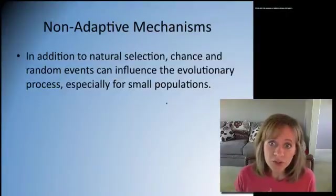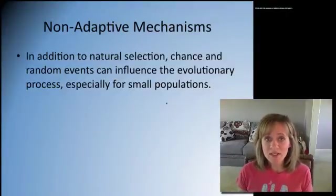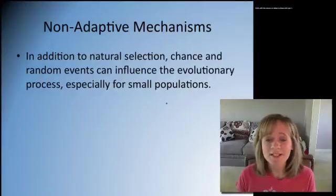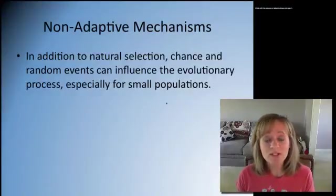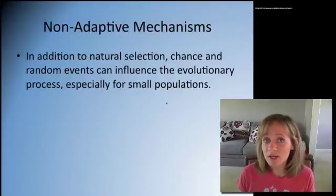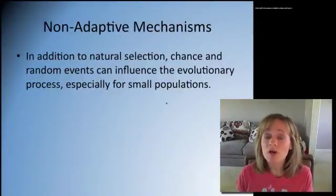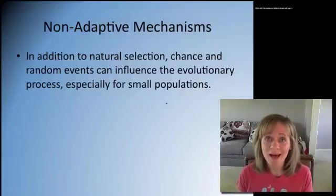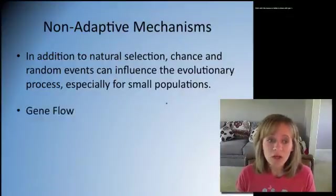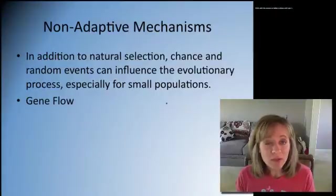In addition to natural selection, we have chance and random events that influence evolution, especially for small populations, because think about it, a small population, you're not going to have a lot of variation. And that was one of those key three components for natural selection to occur, that you had to have variation. So we've got three non-adaptive mechanisms to discuss today.